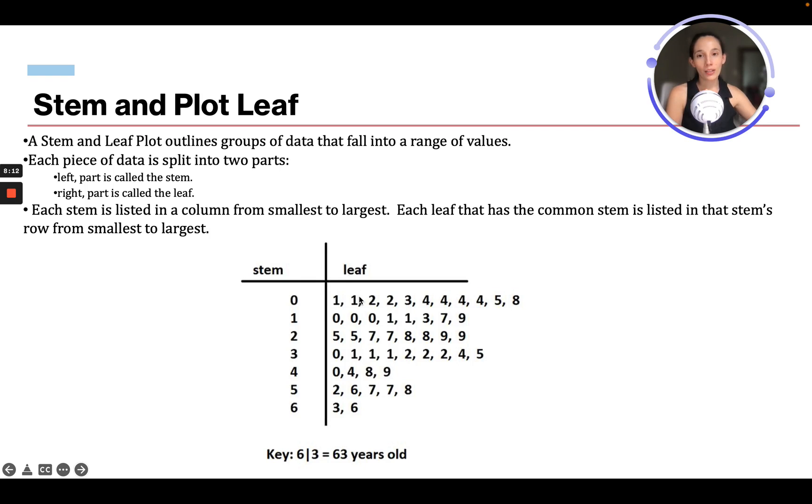So we have one, one, two, two, three, four, and it goes up. So the key: if we had a six for our stem and a three for our leaf, it would be 63 years old.